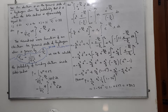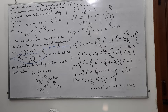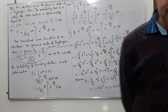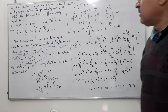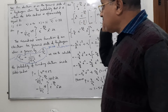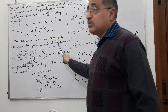We need to calculate the probability of finding an electron inside the Bohr radius, or within the Bohr radius — that is, at a distance less than the Bohr radius. The normalized wave function of the electron for the ground state of hydrogen atom is given as follows.